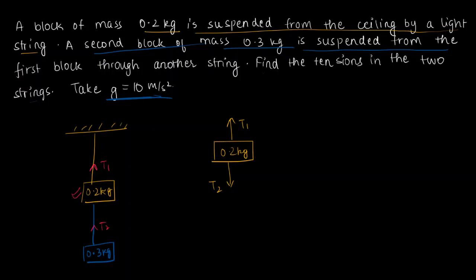And then you also have the gravity acting on this, and that gravity is equal to m times g. And g here is just 10 meters per second squared. So you have 0.2 times 10 newtons, that's equal to 2 newtons.